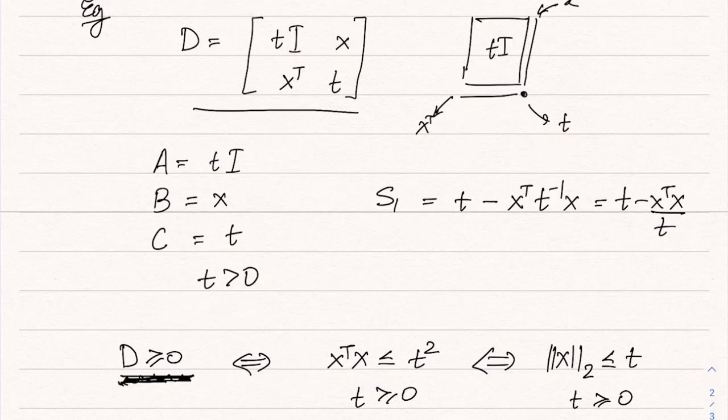Now eigenvalues of D as functions of x and t would be complicated functions. But fortunately it turns out that this constraint is exactly equivalent to this constraint that the norm of x is less than equal to t, which is a simple second-order cone constraint and we know how to handle second-order cone programs. So that's all about Schur complement and as I said earlier, it will play a big role in manipulating, allowing us to manipulate semi-definite programs.